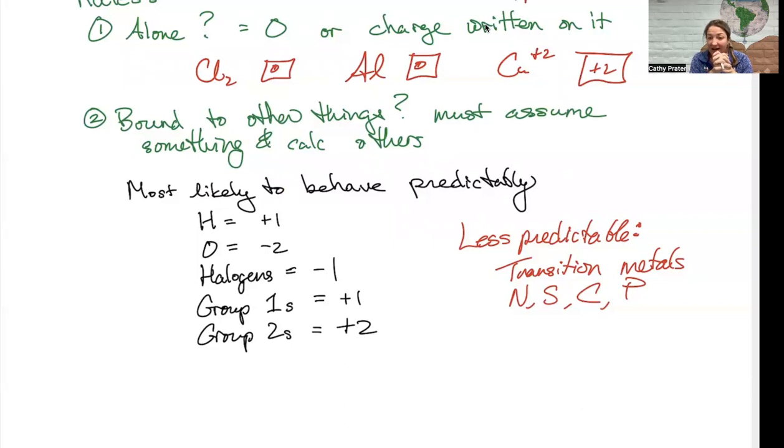Less predictable things are more towards the center of the periodic table, so the edges are more predictable. As you work your way inward, less predictable. These guys are all over the place in terms of what oxidation state they adopt.